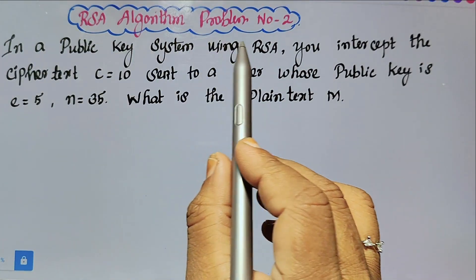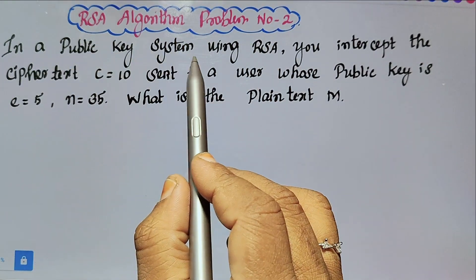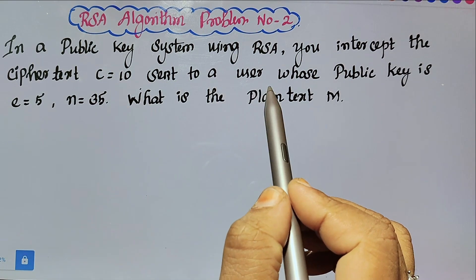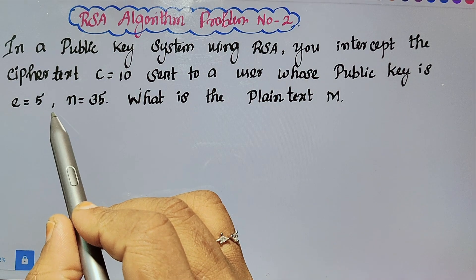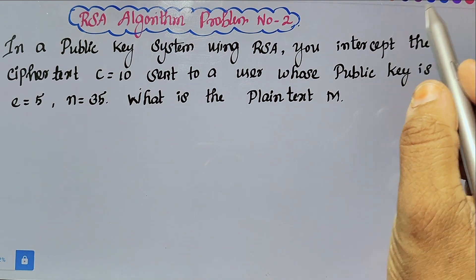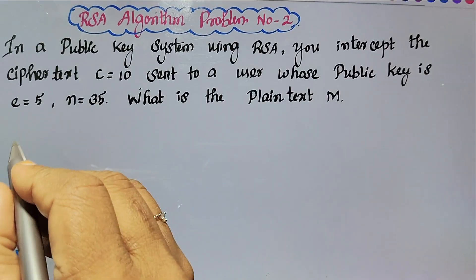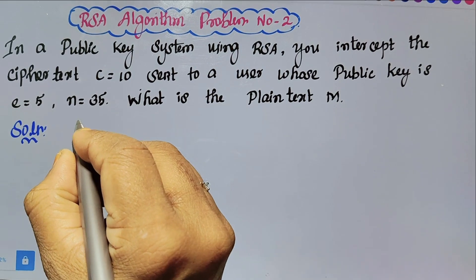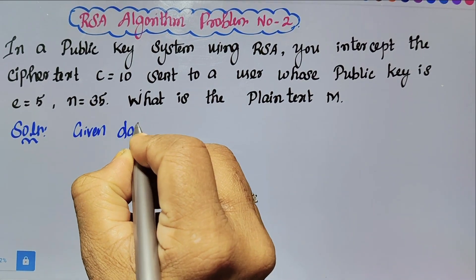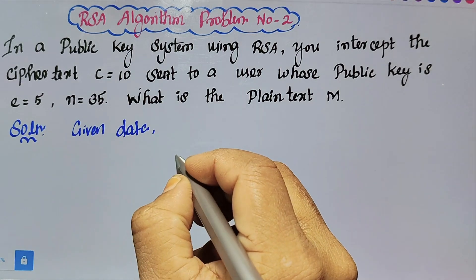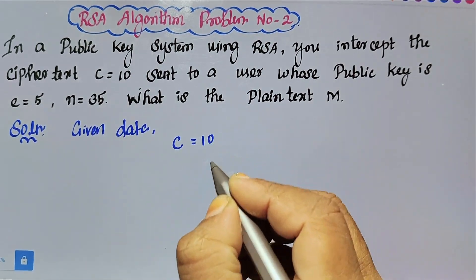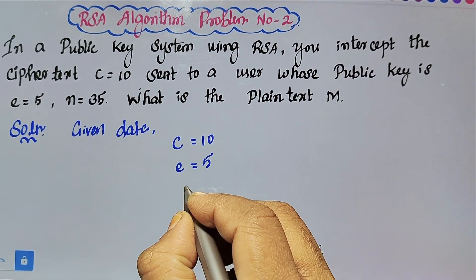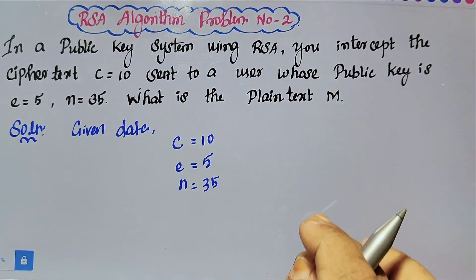In this video, let's look at RSA algorithm problem number 2. In a public key system using RSA, you intercept the ciphertext c equal to 10 sent to a user whose public key is e equal to 5, n equal to 35. What is the plaintext value m? The given data: c equal to 10 is the ciphertext, e equal to 5 is the encryption key, and n equal to 35.